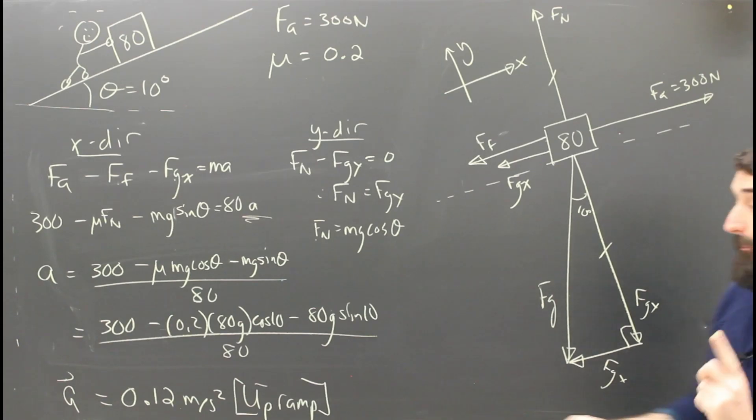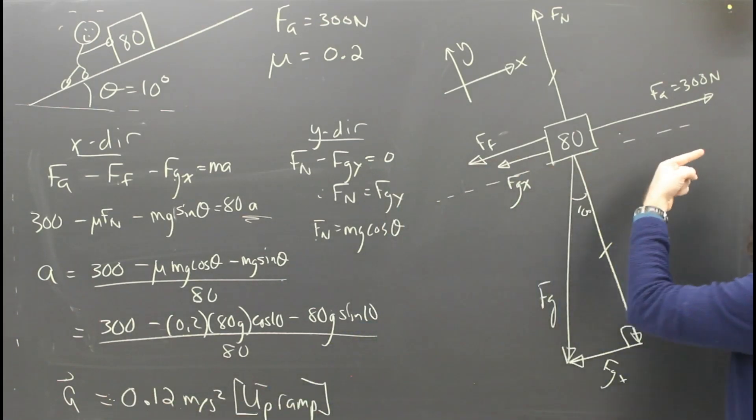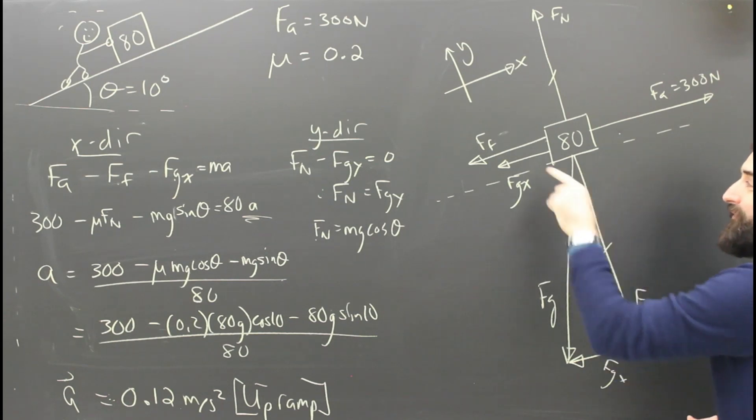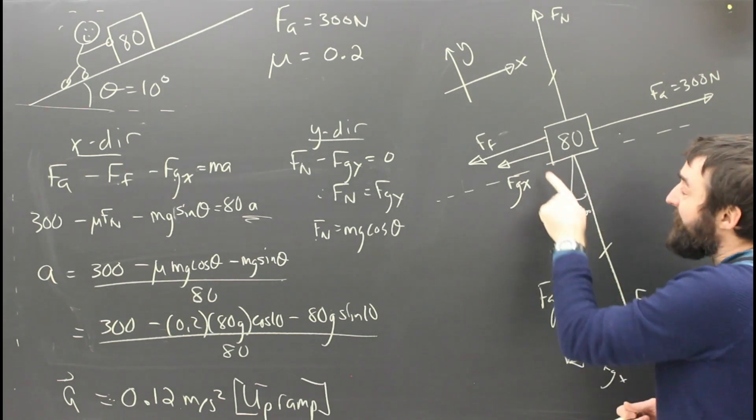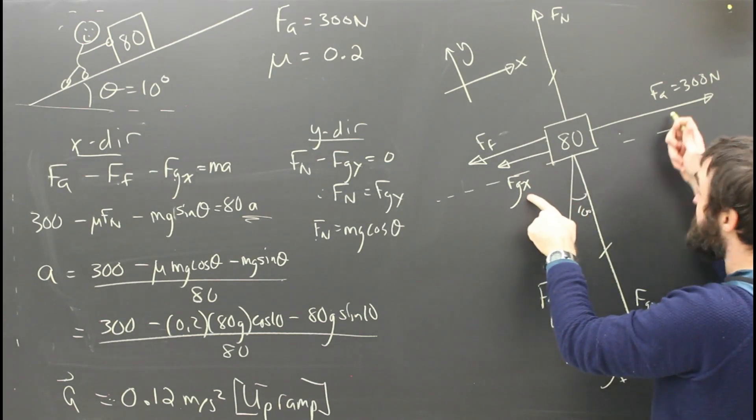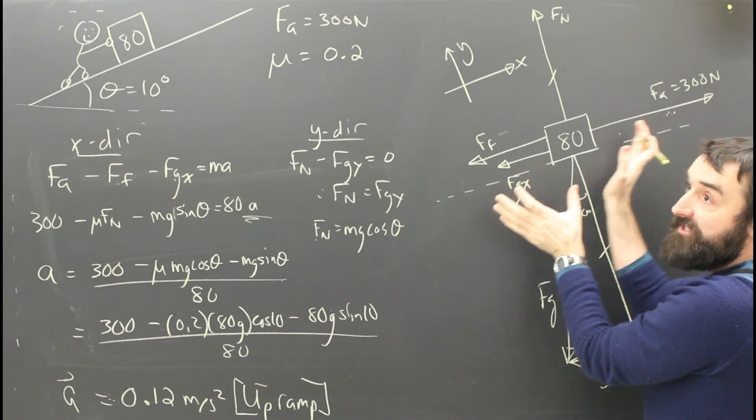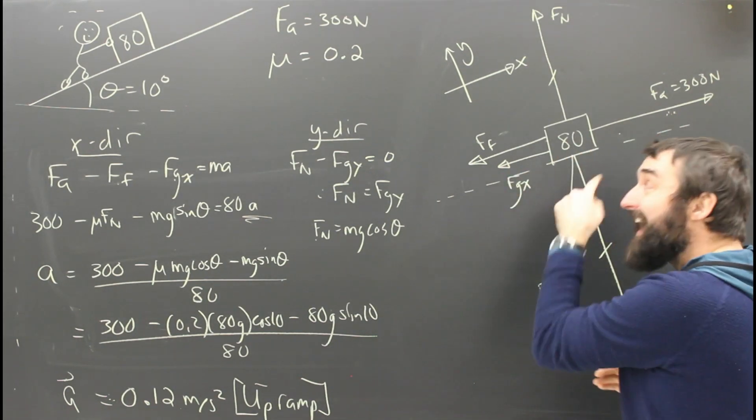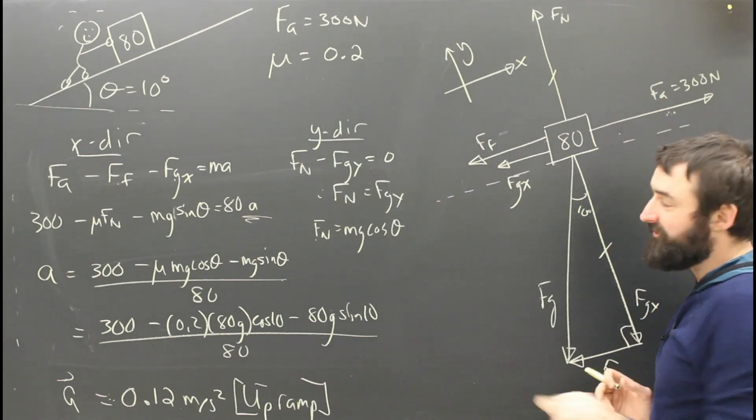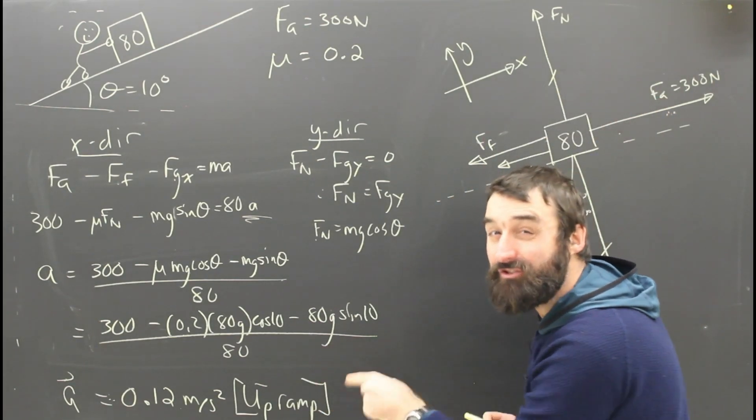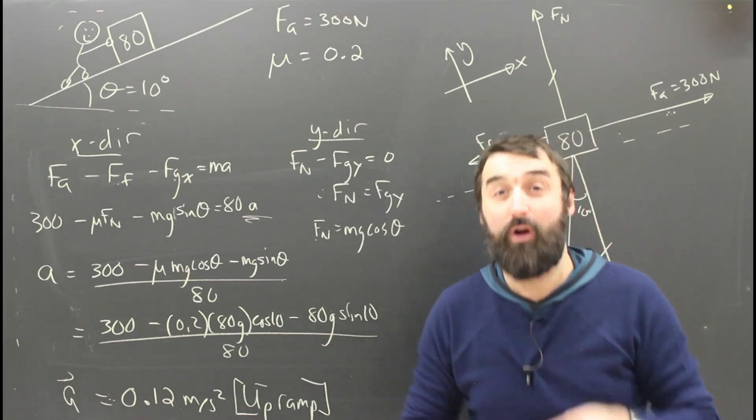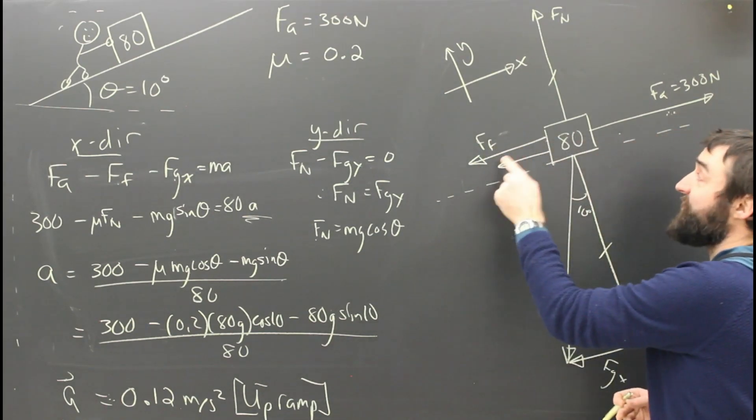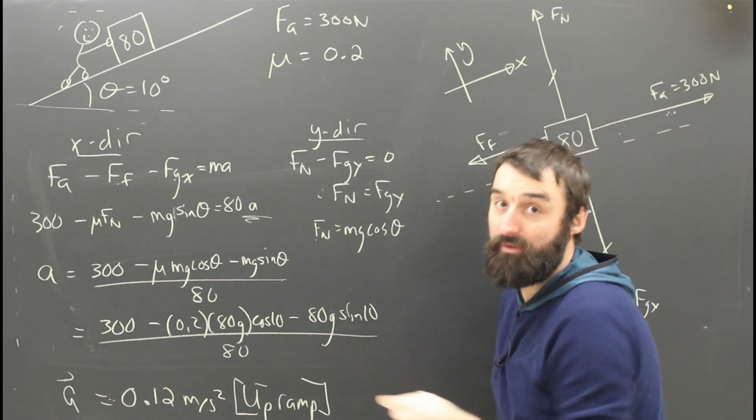So we got a positive answer here, which means the acceleration is up the ramp. But we assumed that it was going up the ramp. If gravity, FGX, had been bigger than FA, this thing still would have gone down the ramp even though someone was pushing it. And in that case, friction would have been in the opposite direction. So if I had gotten a negative answer here, my answer would have been wrong. I would have had to go back and change FF and get the new answer.